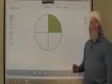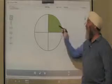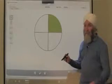So here we have a circle that's been divided into four equal parts, and we can call those fourths. One of them has been shaded. We can say that one-fourth of the circle has been shaded.